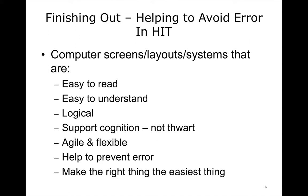How can we help to avoid error in HIT? HIT can help to reduce error, but only if it is well designed and appropriate for the task at hand. Like in aeronautics, they learned very quickly not to put the eject seat button next to the emergency brake button. So we need systems that are easy to read, easy to understand, logical, able to support rather than thwart cognition, agile and flexible, help to prevent error, and make the right thing to do the easiest thing to do.